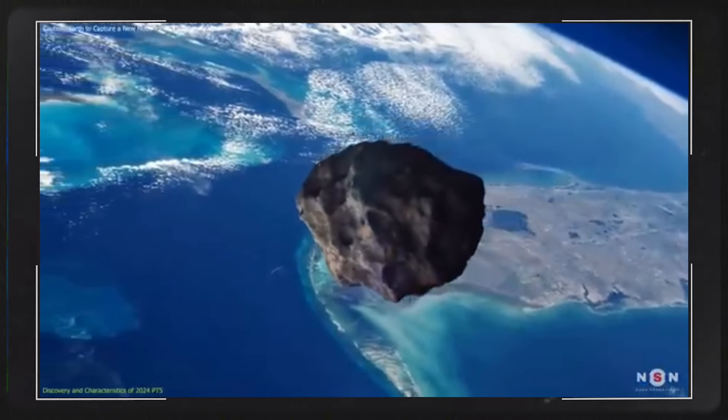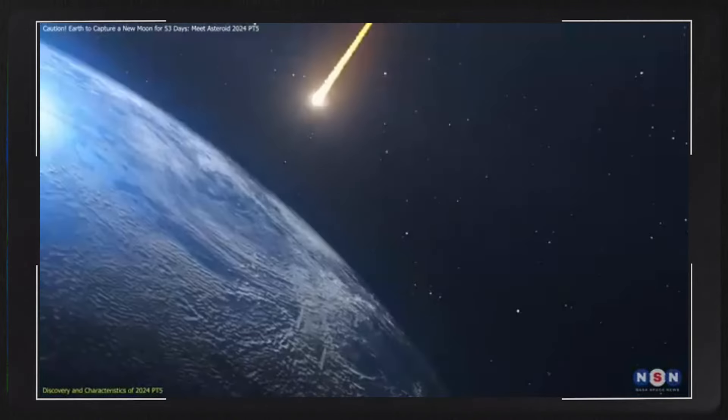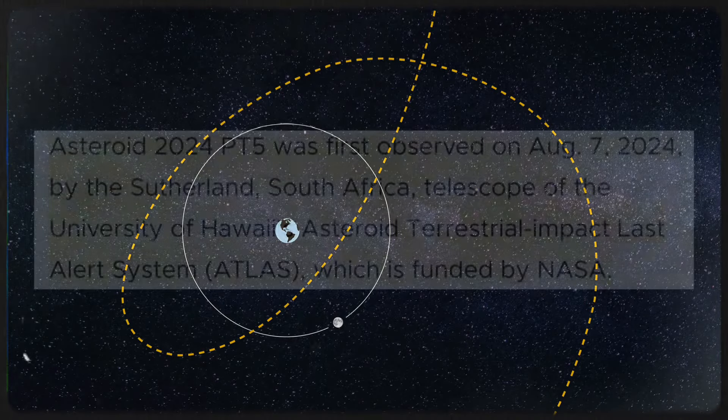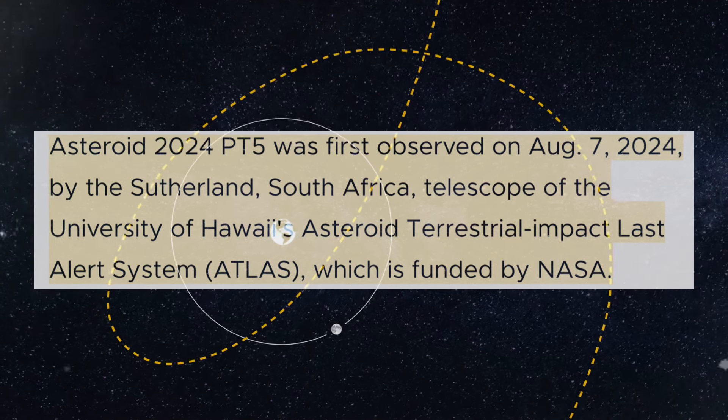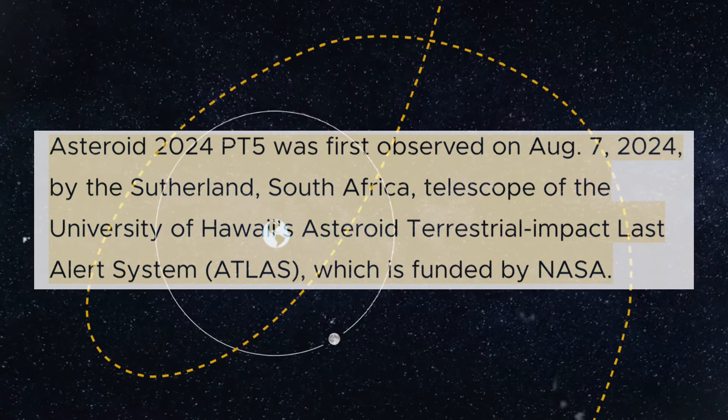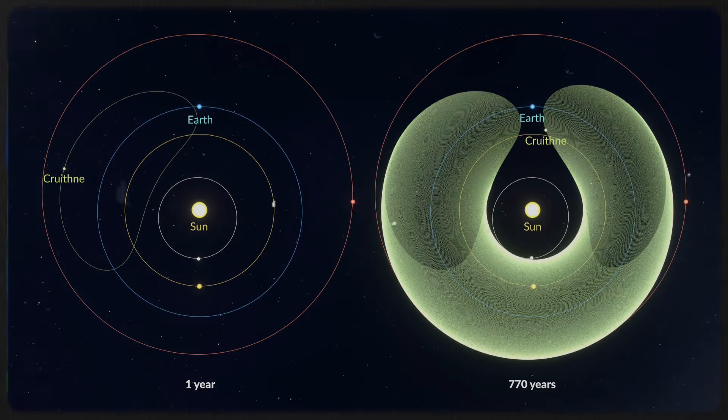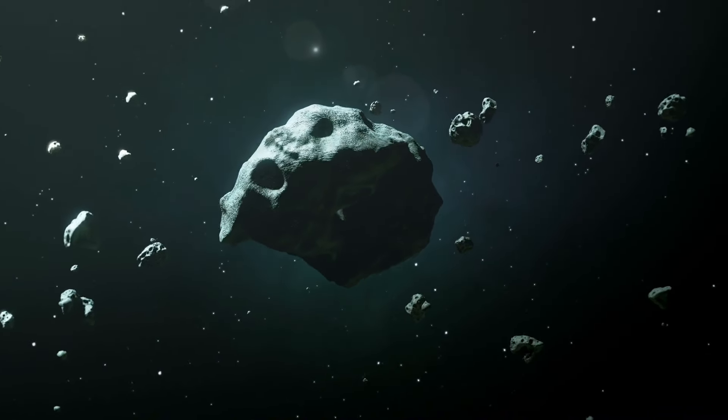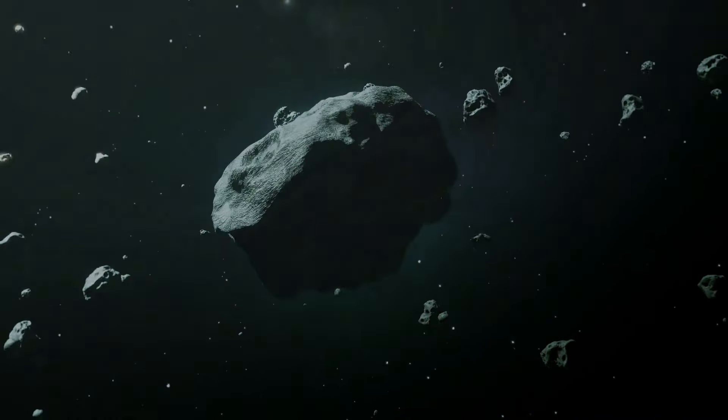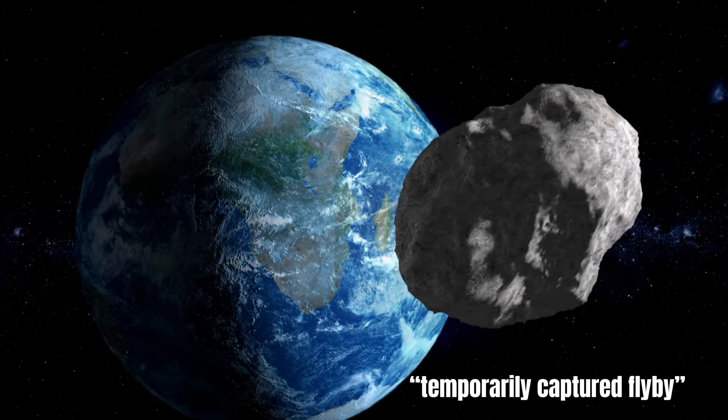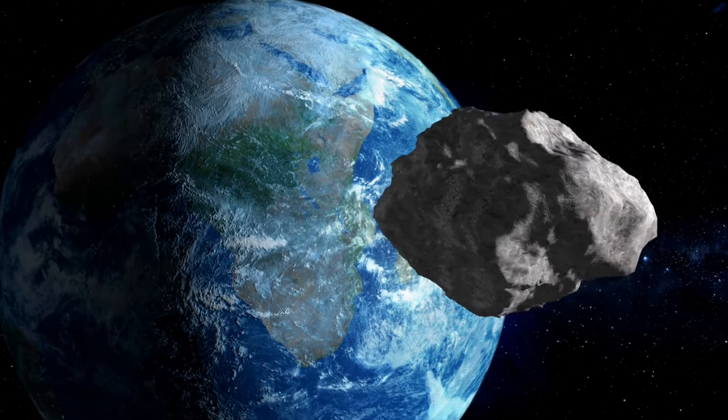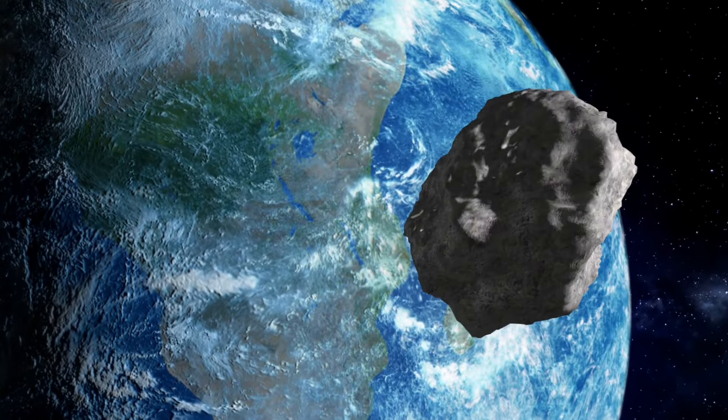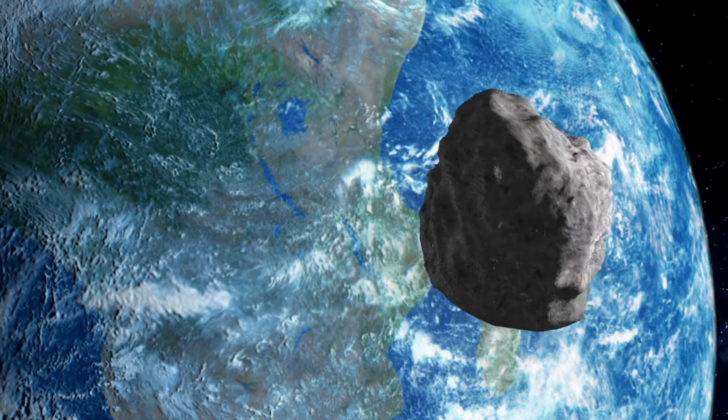This unusual event provides a new spin on what could be described as a moonwalk of a different kind. The asteroid 2024 PT5 was first discovered on August 7 of this year by a telescope operated by the Asteroid Terrestrial Impact Alert System in South Africa. Since then, it has followed a unique horseshoe-shaped orbit around the Earth. On September 29, the asteroid will experience a gravitational tug that will draw it closer to Earth. This encounter is classified as a temporarily-captured flyby, during which the asteroid will become a mini-moon for our planet, staying within Earth's gravitational field for an estimated 56.6 days before drifting away once more.